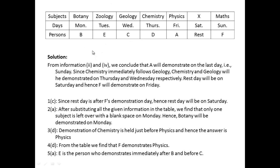Who among the following demonstrates just after B and before C? Just after B and before C, we have E, so E is the answer. This is how these types of questions should be solved — first draw three columns or three rows and fill in the subjects, days, and persons according to the conditions given, then solve each question one by one.